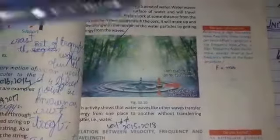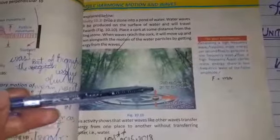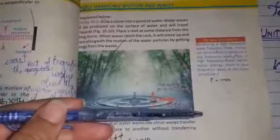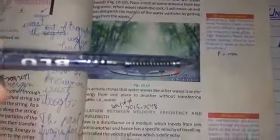If you look at an example of an activity, you can take a water tub or anything. If you keep a cork and produce waves by dropping a stone, the cork will move. This means that waves transfer energy from one side to the other side.